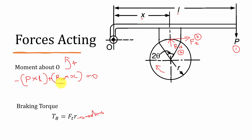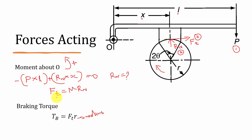From this equation, P, L, and x are known values; only Rn is unknown. We know that the relation between Ft and Rn is Ft = μ × Rn. So from the moment equation you can calculate Rn, then substitute into Ft = μ × Rn — where μ is the coefficient of friction based on the brake shoe material, typically around 0.3 to 0.35 — to get Ft, and finally substitute Ft into the braking torque equation to find the braking torque.